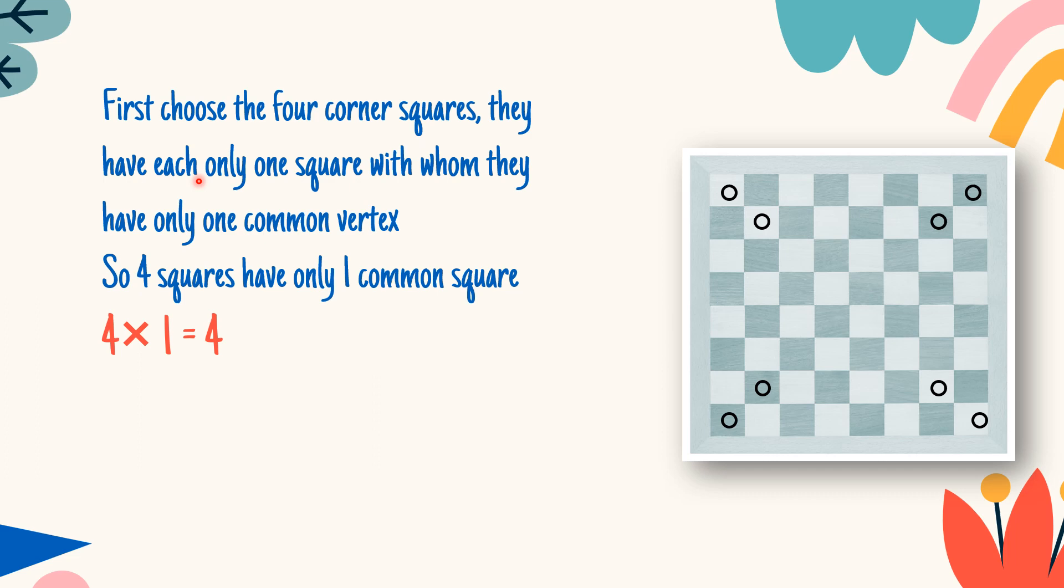Let's begin the answer. First of all, we are choosing the four corner squares. When we talk about corner squares, that means we are choosing 1, 2, 3, and 4. They each have only one square with whom they have one common vertex. You can clearly see that this square is having one square which has a common vertex with it. There is no other possibility that this square will share a common vertex with any square other than this. So four squares have only one common square to share the vertex. So we have 4 multiplied by 1, that is 4.